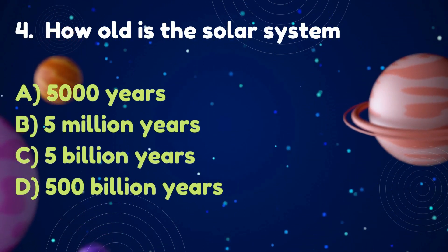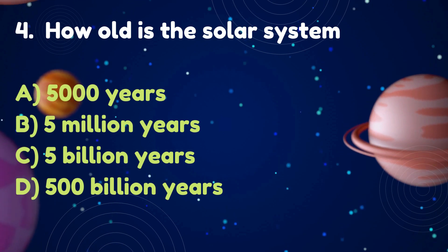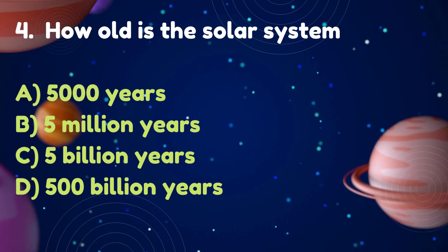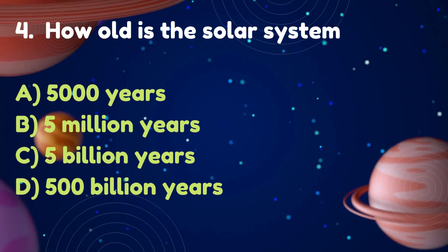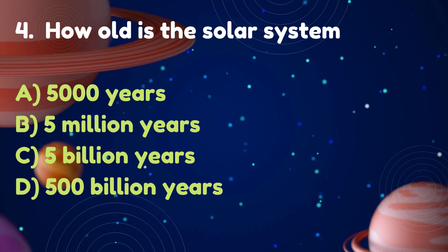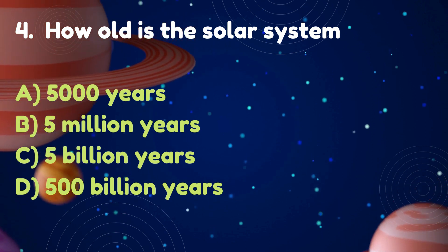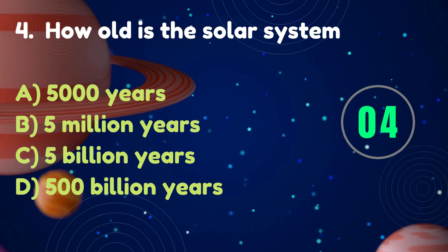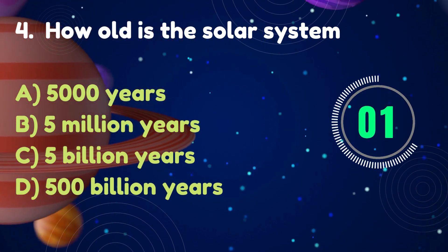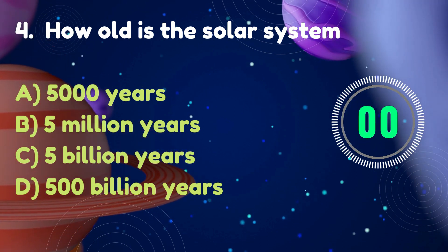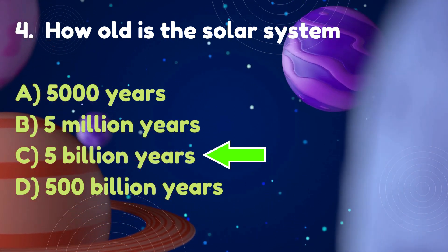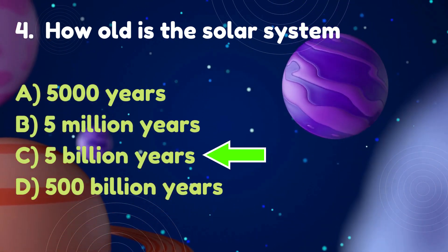How old is the solar system? Options: 5,000 years, 5 million years, 5 billion years, 500 billion years. Answer: 5 billion years.